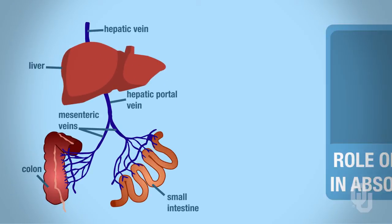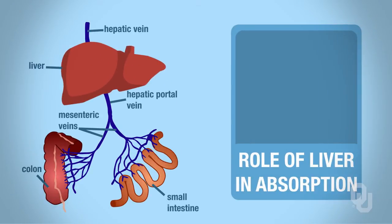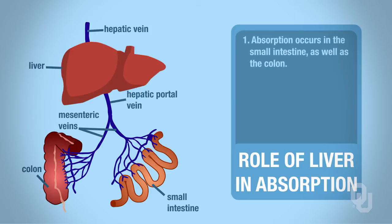Now we have the role of the liver in absorption. Keep in mind that the liver is one of the accessory organs, but it's an important component to include here so that you can start putting some information together in terms of what's going on in the digestive tract. Here we have the intestines, and digestion and absorption — a lot of that — takes place in the small intestine.